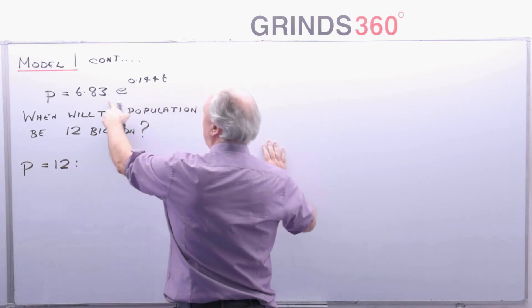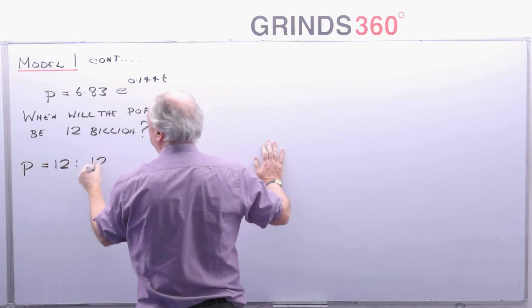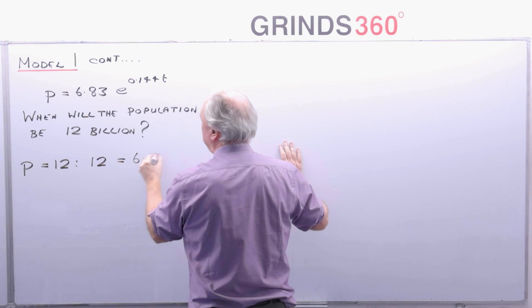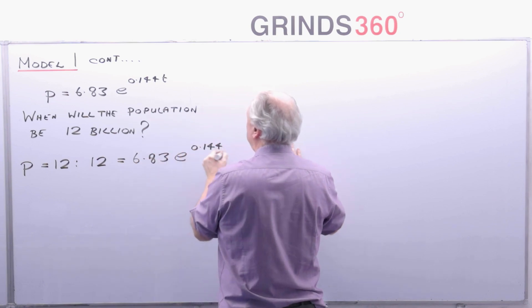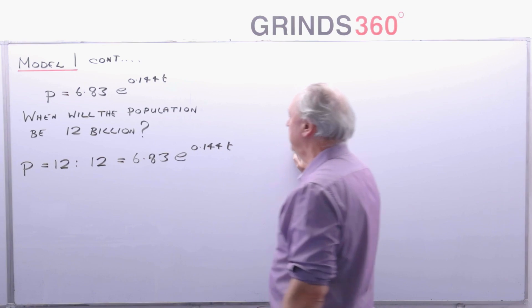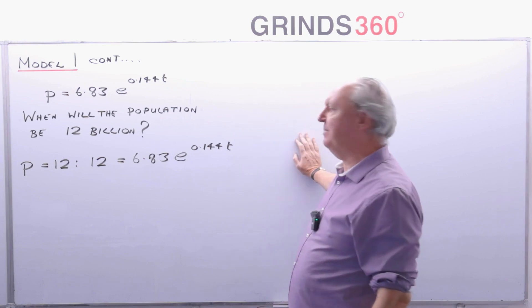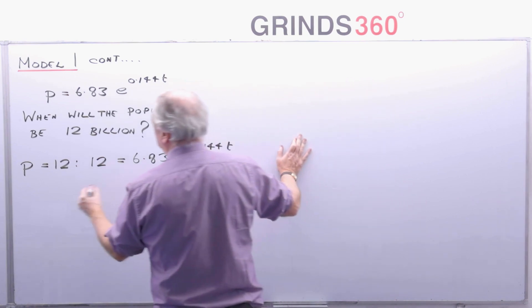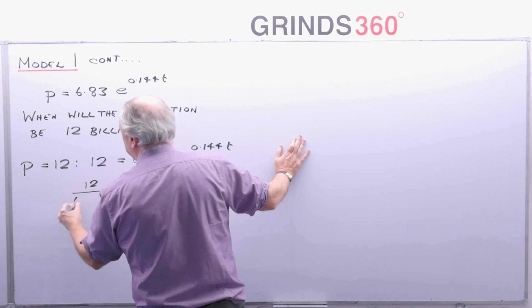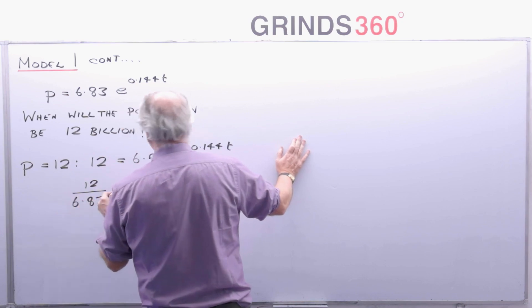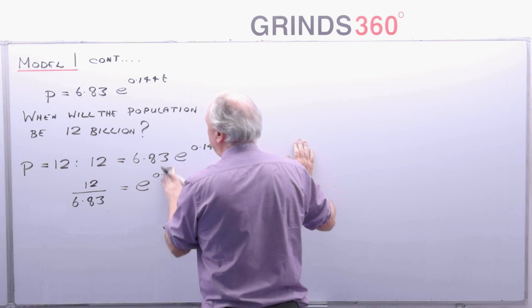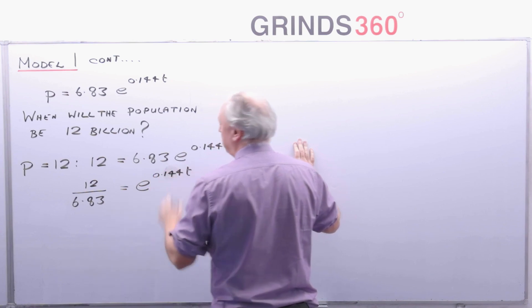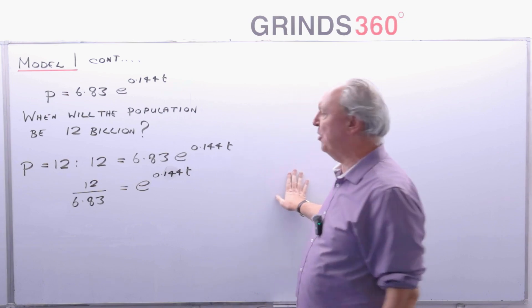So in my solution here, replace p by 12. And that's equal to 6.83 e to the power of 0.144t. Let me solve that for the time t. So divide by 6.83. That's equal to e to the power of 0.144t. Get the log of both sides.